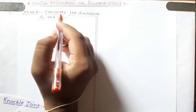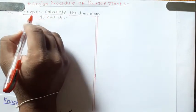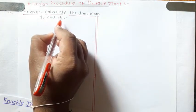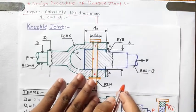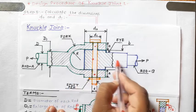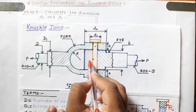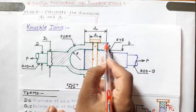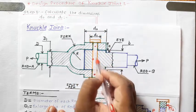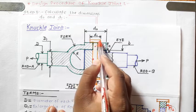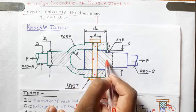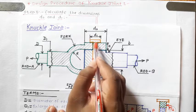Welcome to this video on the design procedure of a knuckle joint. This is step number five: calculate the dimensions DO and D1 from standard relations. DO and D1 are defined as follows — the fork and eye both have an end feature like a hollow cylinder, so they must have an outer diameter. The outer diameter of the fork end or eye end is DO, and the diameter of the pin head is D1.